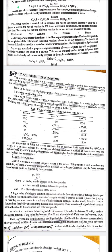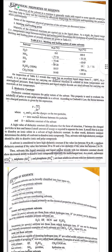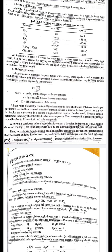According to Coulomb's law, the force between two charged particles is given by F = E₁E₂ / Dr², where E₁ and E₂ are the charges, r is the internuclear distance, and D is the dielectric constant of the solvent. A high value of D indicates that the force of attraction F between charged particles is less, and hence a small amount of energy is required to separate the ions. It is therefore easy to dissolve an ionic solute in a solvent of high dielectric constant.